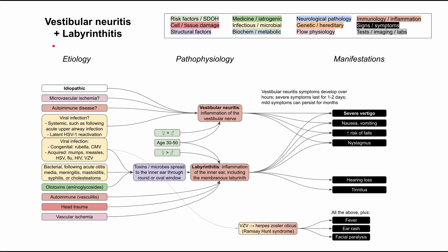This is a mechanism of disease map for vestibular neuritis and labyrinthitis. These are two conditions that involve inflammation of the vestibular nerve and the inner ear respectively, and they both cause severe vertigo, which is their most prominent symptom. We'll be talking about the etiology, the pathophysiology, and the manifestations of these conditions.